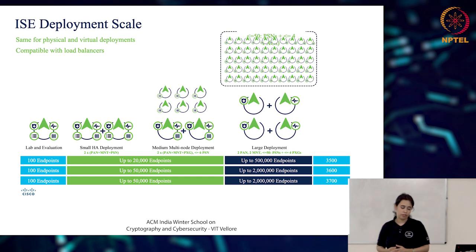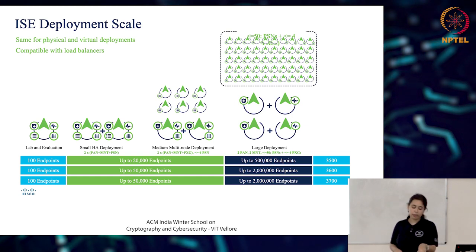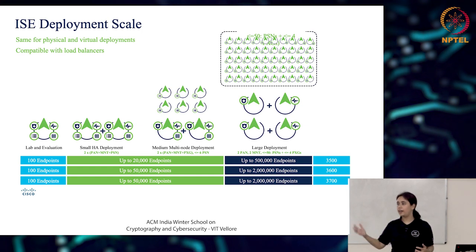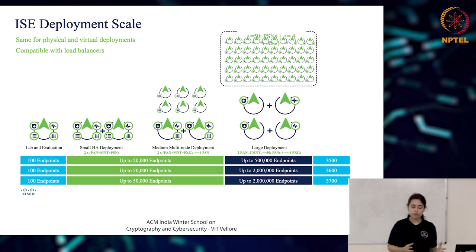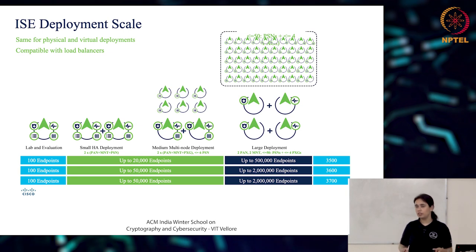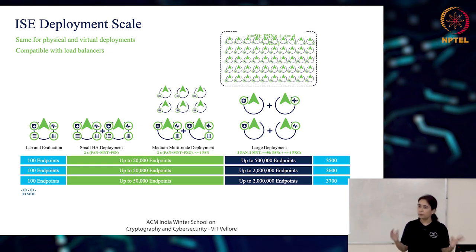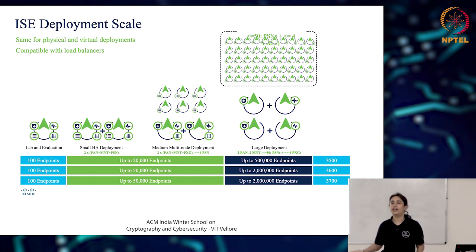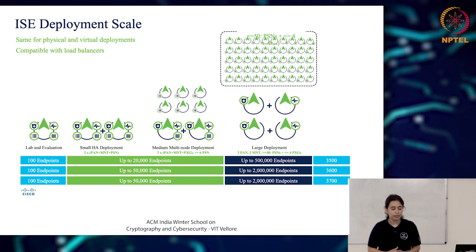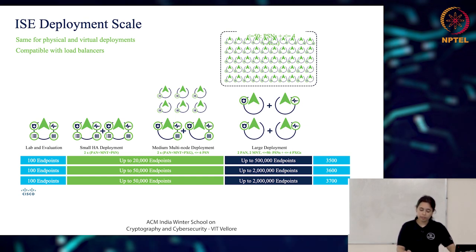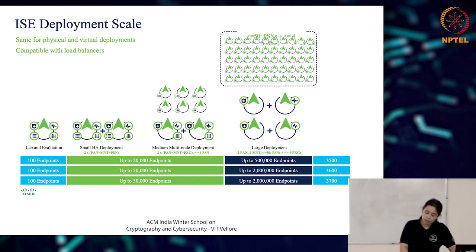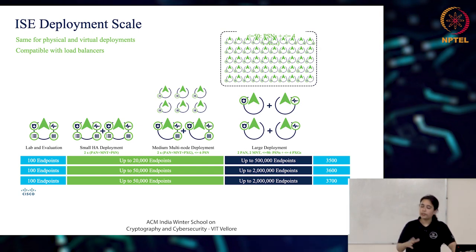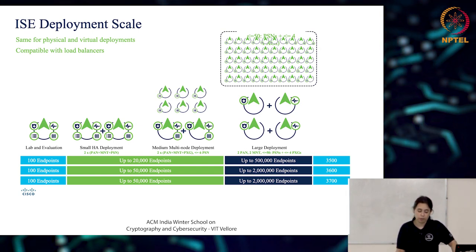If it's just an evaluation or lab environment, a standalone deployment works. For a small HA deployment, you can have two nodes where both have all personas enabled, configured so if one node goes down the other takes over, or both function simultaneously. For a medium multi-node deployment, you vary the number of nodes based on scale. Depending on your deployment scale, you can scale the number of nodes and deployment size accordingly.